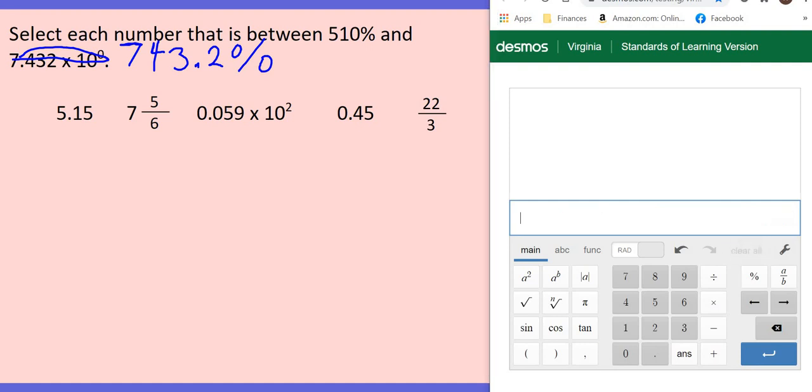So I'm going to clear that one out and I'm going to put the rest in the calculator. Okay, I can do it one at a time since I'm just figuring out what's between. So 5.15 times 100 at 515%. That is definitely between 510 and 743. So there's my first answer. I'm going to save myself some keystrokes and just put in the numbers here. 7 space, I'm going to do 5 divided by 6 and that gives me 783, which is bigger than 743. So that's not it. And I'm going to come right back here. Notice what I'm doing in my calculator. I do everything in my calculator. 0.059. And then I'm doing times 10 raised to the second power.